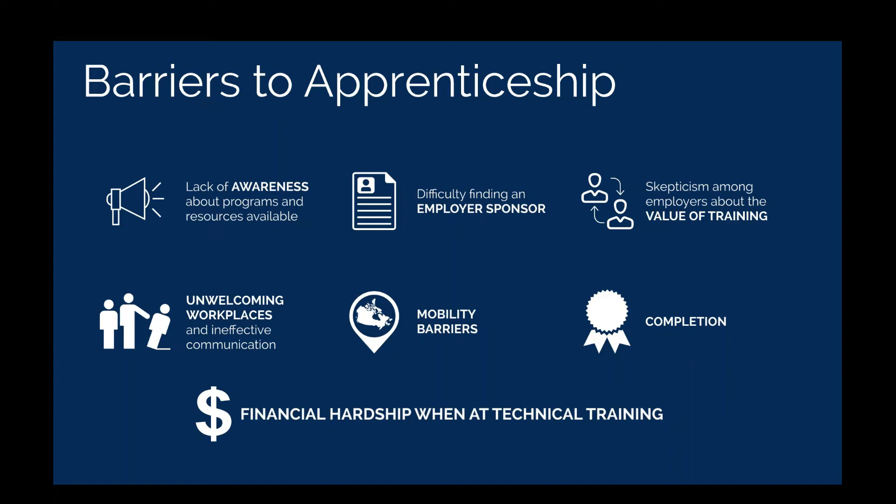Completion is something we hear about all the time. Though completion rates vary by trade and region, studies have shown that roughly half of apprentices will achieve certification — meaning the other half don't for some reason. In a recent survey among CAF's Apprentices in Canada ePanel, we heard that 95% of apprentices intend to complete, so completion challenges are not a problem with motivation. Something we regularly hear about is that apprentices face financial obstacles to returning to school, and this is obviously the barrier the Canada Apprentice Loan was designed to address.